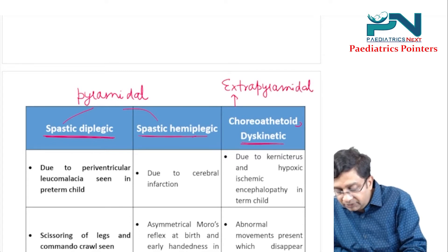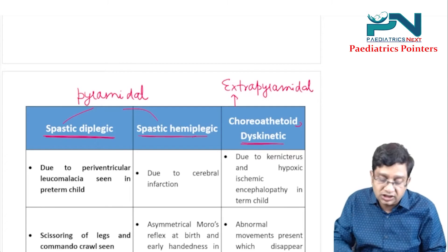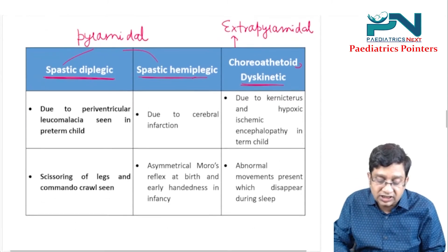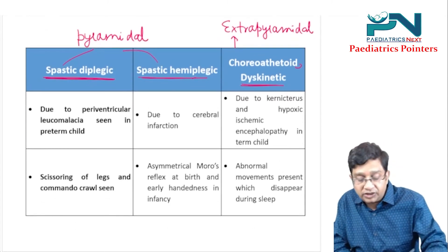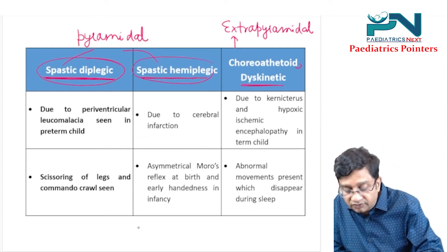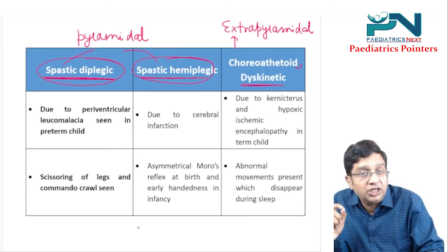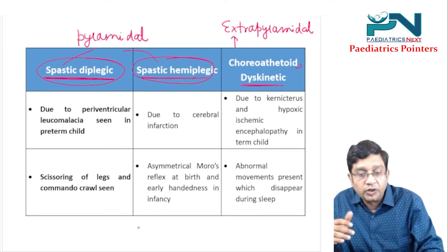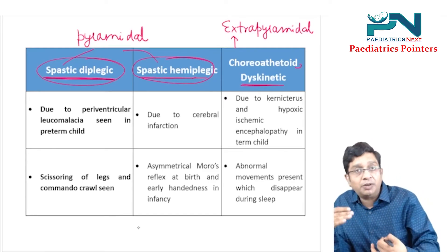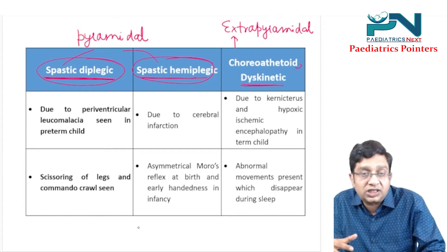The pyramidal type signifies an upper motor neuron lesion, so the deep tendon reflexes will be increased in both spastic types, and the Babinski sign will be positive. In spastic diplegic type, the underlying lesion is periventricular leukomalacia.